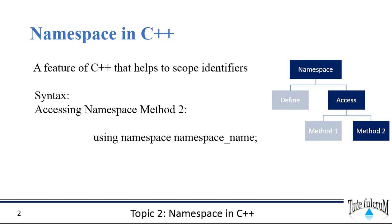So why do we need namespace? It is mainly used to avoid name collisions. Consider a situation when we have two students with the same name in the same class. Whenever we need to differentiate them, we would have to use some additional information along with the name, like the father's name or mother's name. The same situation can arise in your C++ applications.